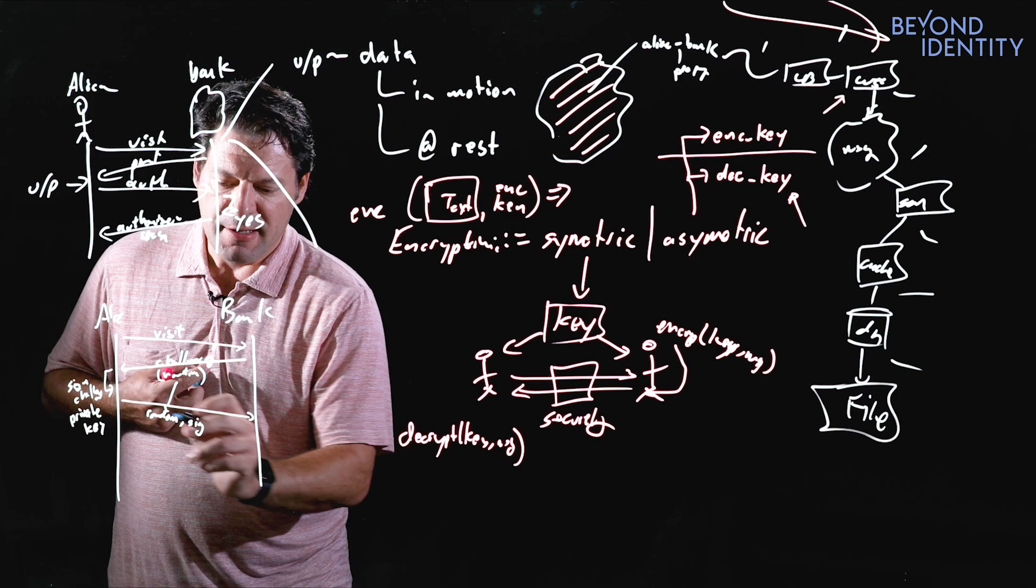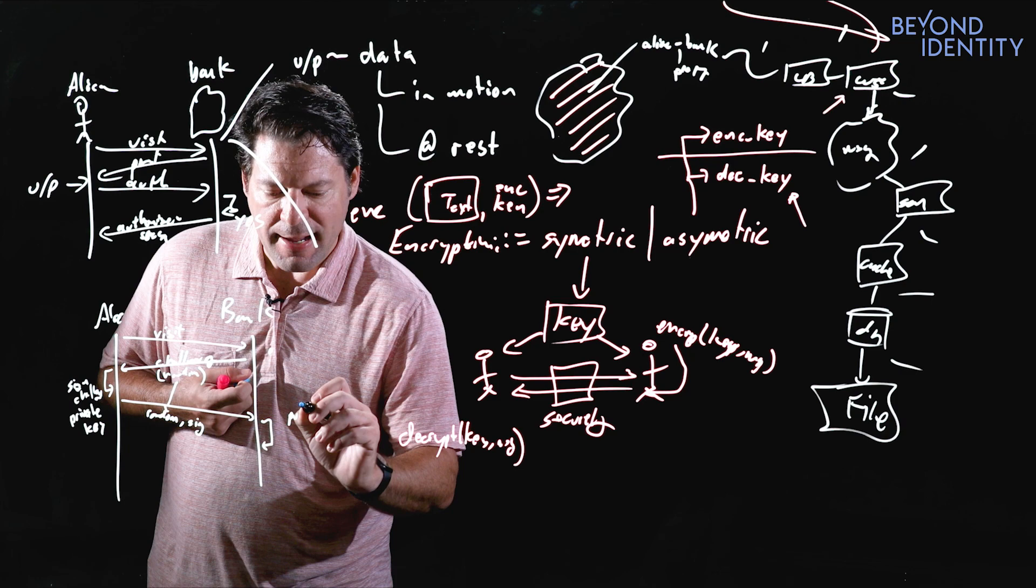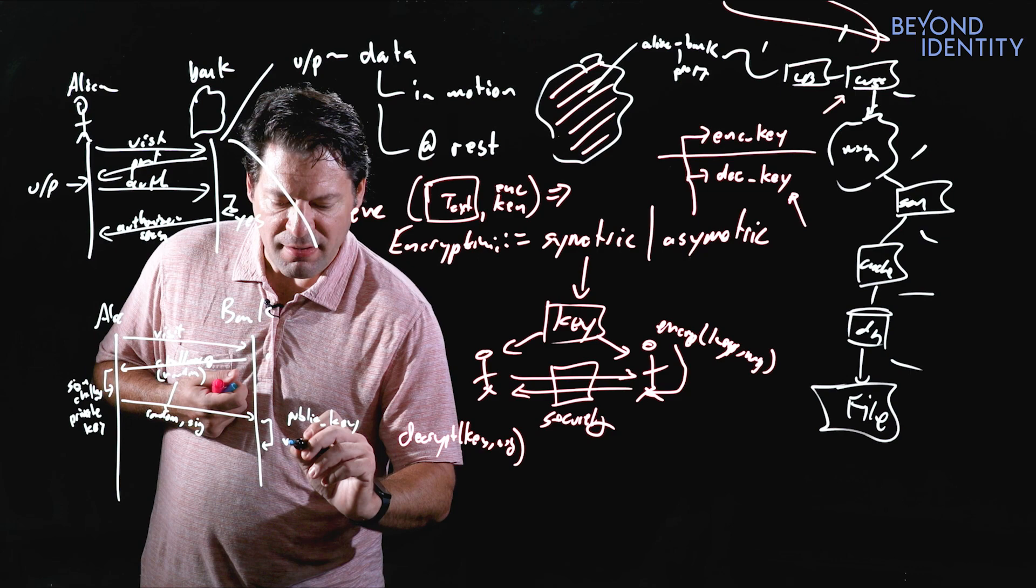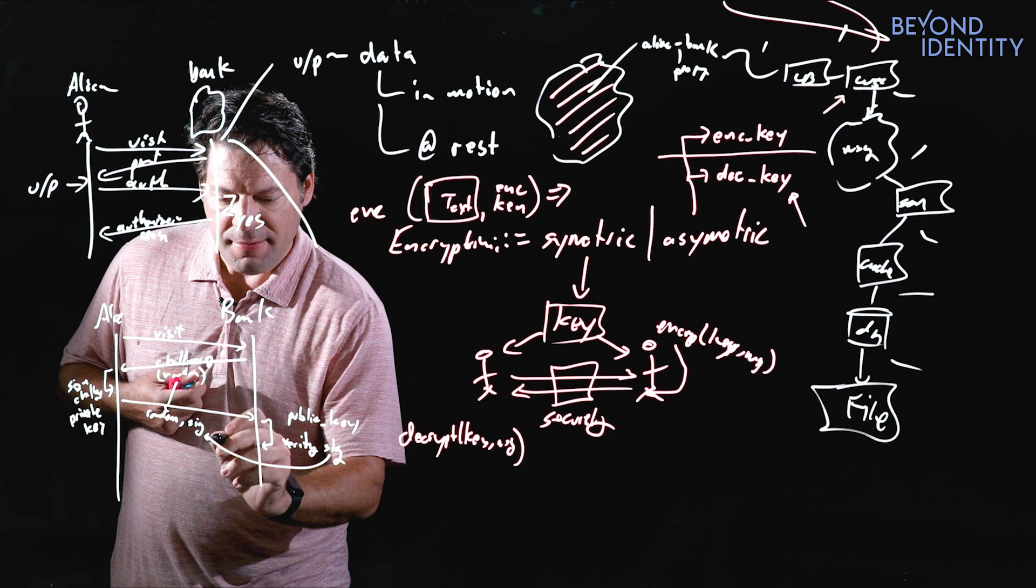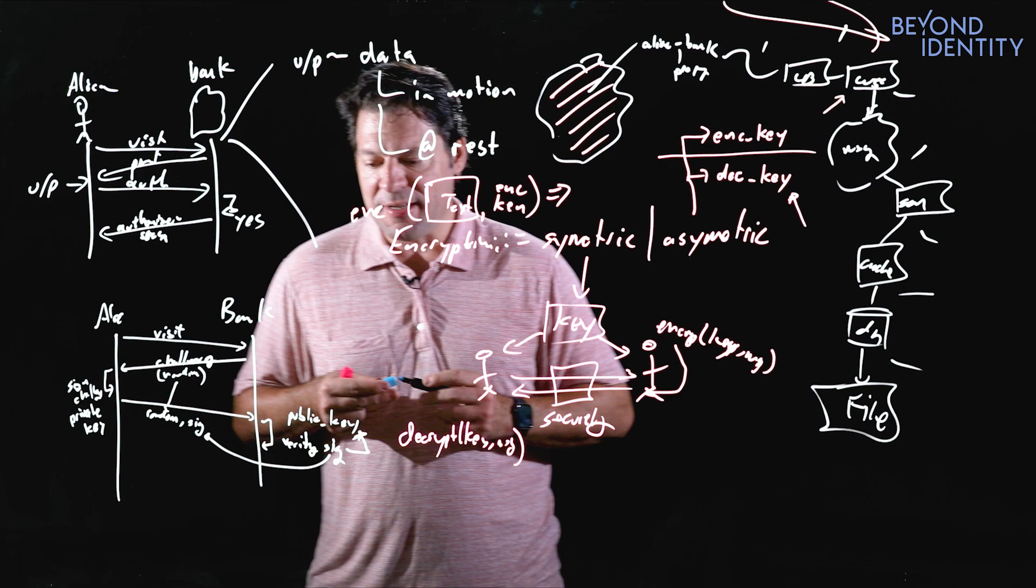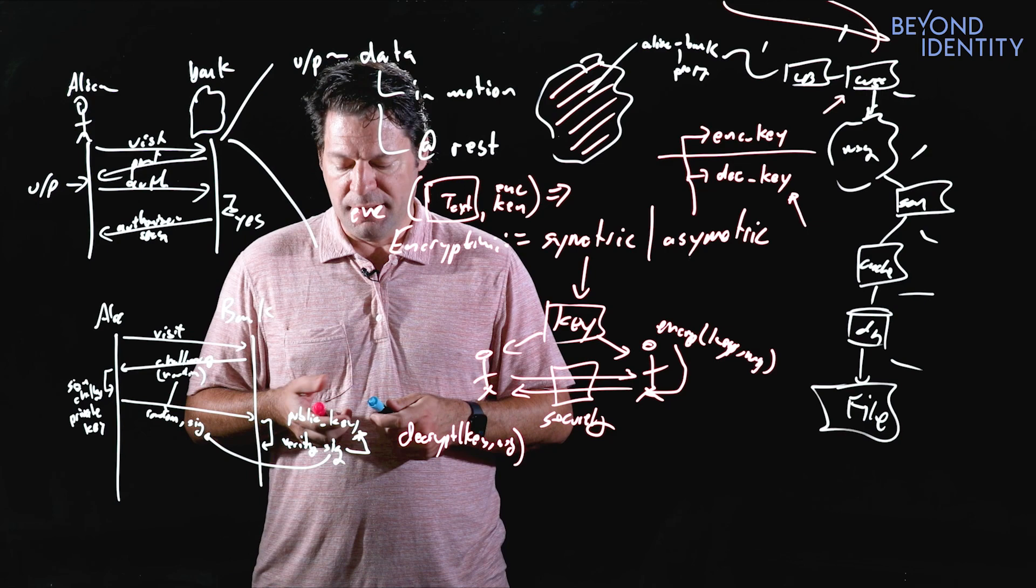The bank has Alice's public key and can use that public key to verify the signature—that the signature is in fact correct against the public key. This shows us that only the holder of the private key is able to produce the signature. Just a reminder of what that might look like from an envelope perspective.